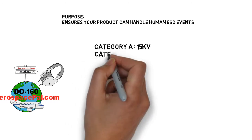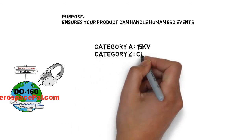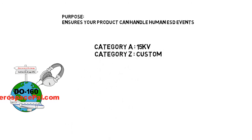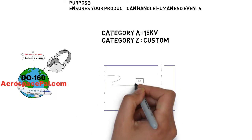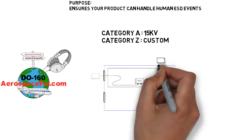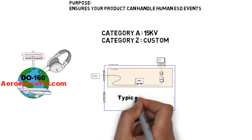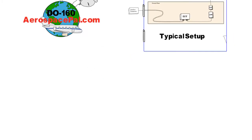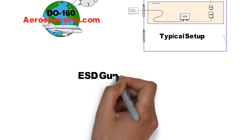Although it does not specify in DO-160 how to show a custom category, use CAT Z for that custom level if needed. The test setup for ESD is a general setup that is specified in 20.3A and also shown here.